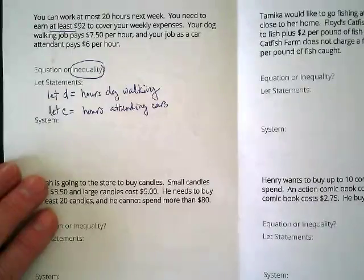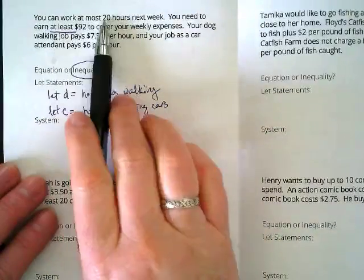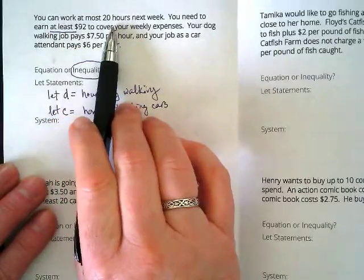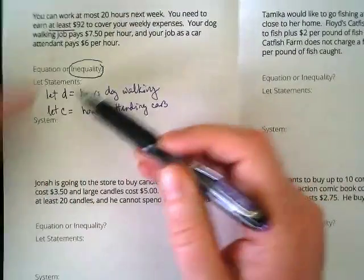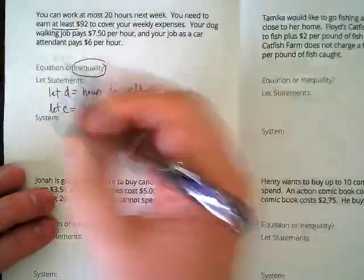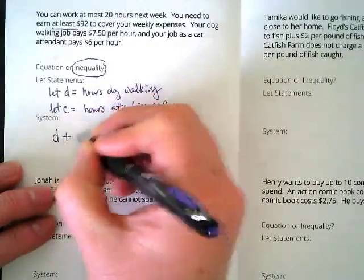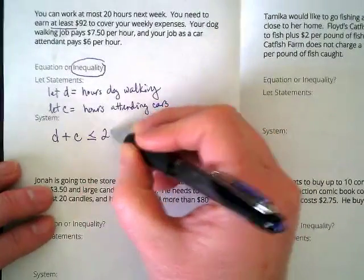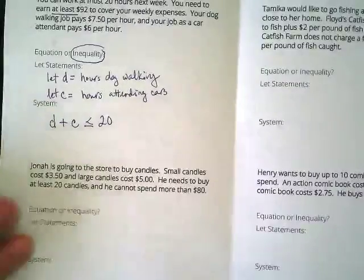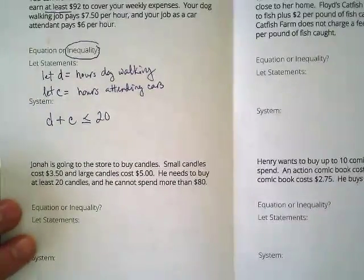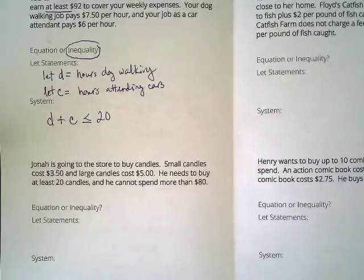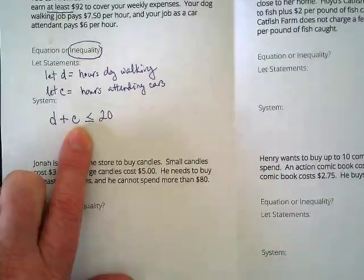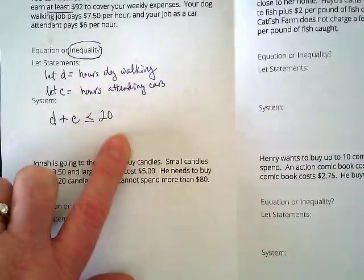So what's some important information for us to use here? Well, the first sentence tells us, you can work at most 20 hours next week. What kind of two jobs does this person have? Dog walking and cars. So D plus C less than or equal to 20. And realize this first inequality is all about the hours, right? This is hours of dog walking. This is hours of cars. Less than or equal to 20 hours total.